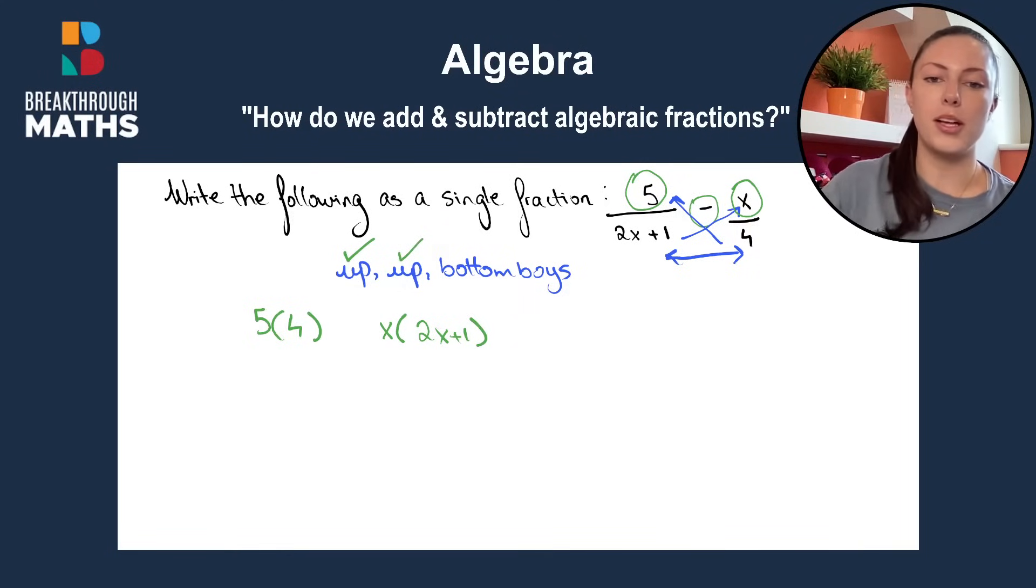Then we move on to the bottom boys. So we draw a line to put them on the bottom. So we have 2x plus one is joined up to four, as we can see with our arrow in blue. So 2x plus one was connected to four. So we multiply them. And that's our bottom boys done.